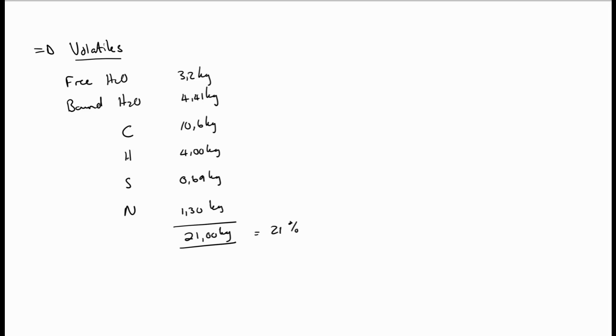And there we have our coal analysis actually. We can now go and say that we know the amount of free water, 3.20 kg, the amount of bound water, 4.41 kg, the volatile carbon which is 10.6 kg, the available hydrogen, the sulfur and the nitrogen. And like we said before, those are all volatiles. So we have 21 kg or equal to 21% of volatiles which we had in our proximate analysis.